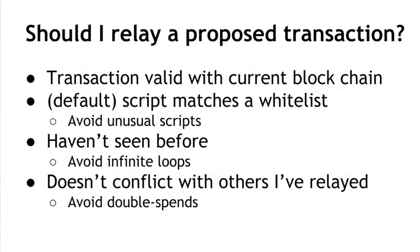How do nodes decide when they hear about a new transaction whether or not they should propagate it? The most important thing they do is check, given their view of the blockchain, whether the transaction is valid. They do all the transaction validation — they run the script, see that it checks out, and verify the coins being redeemed haven't already been spent. With a couple of caveats: by default nodes won't relay a transaction if it uses a non-standard script — if it doesn't match a fairly simple whitelist of known scripts, even if it's technically valid.